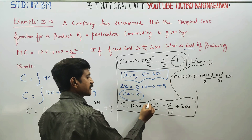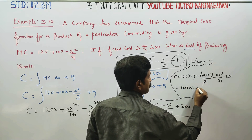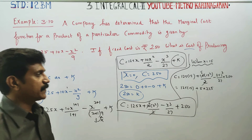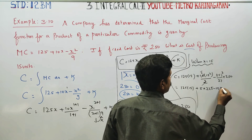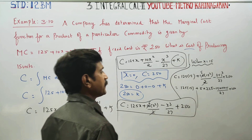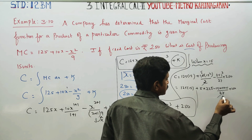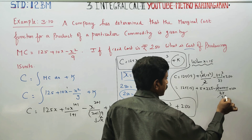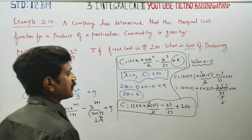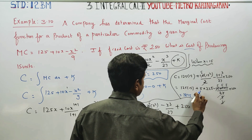Simplifying: 2 and 10 cancel to give 5. So we get 125 into 15 plus 5 into 15 squared, minus 15 into 15 into 15 by 27, plus 750. Further simplifying, 27 cancels with 15 cubed giving a factor of 125. So 125 into 15 equals 1875.